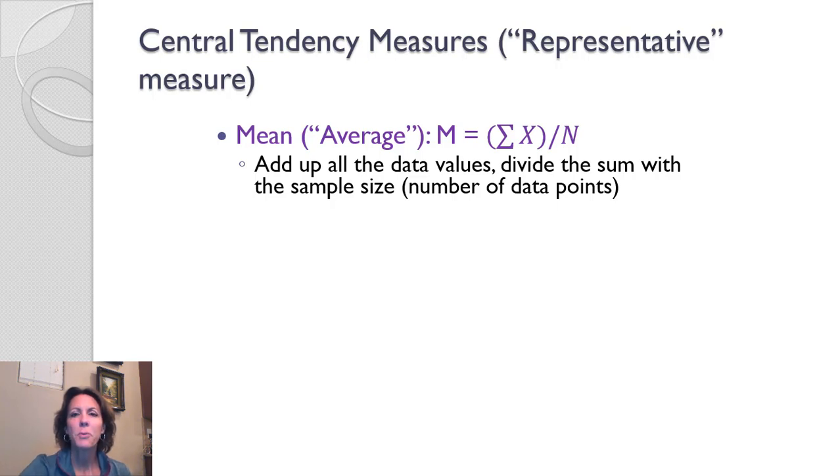And it's represented often with a capital M. And here is the formula for the mean. And we talked about this sigma summation sign before. So basically, to find the mean, we're going to sum up all the scores in a set and divide that number by the total number of scores. You're adding up all the data values and dividing it by the sample size. That gives us the mean, the average score.